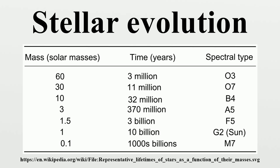A protostar continues to grow by accretion of gas and dust from the molecular cloud, becoming a pre-main-sequence star as it reaches its final mass. Further development is determined by its mass.